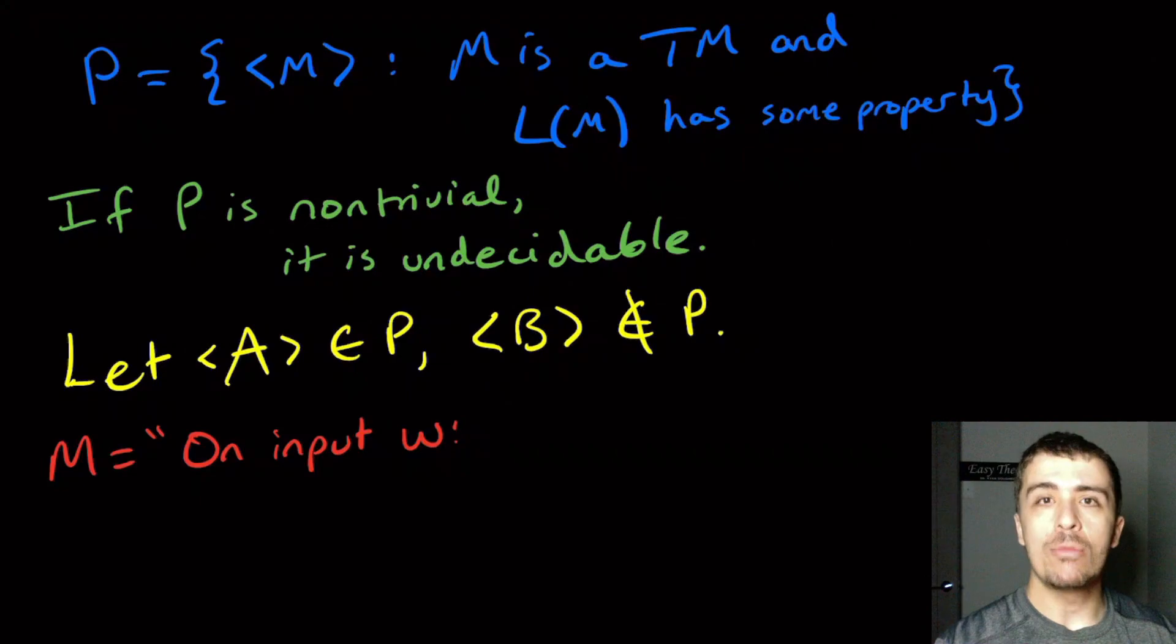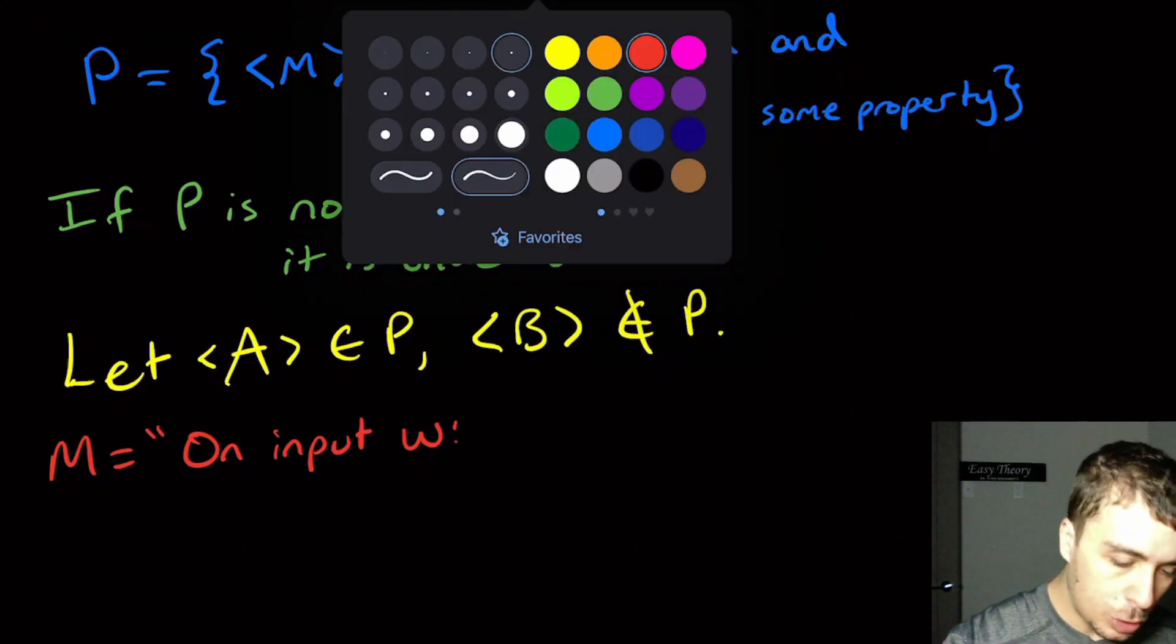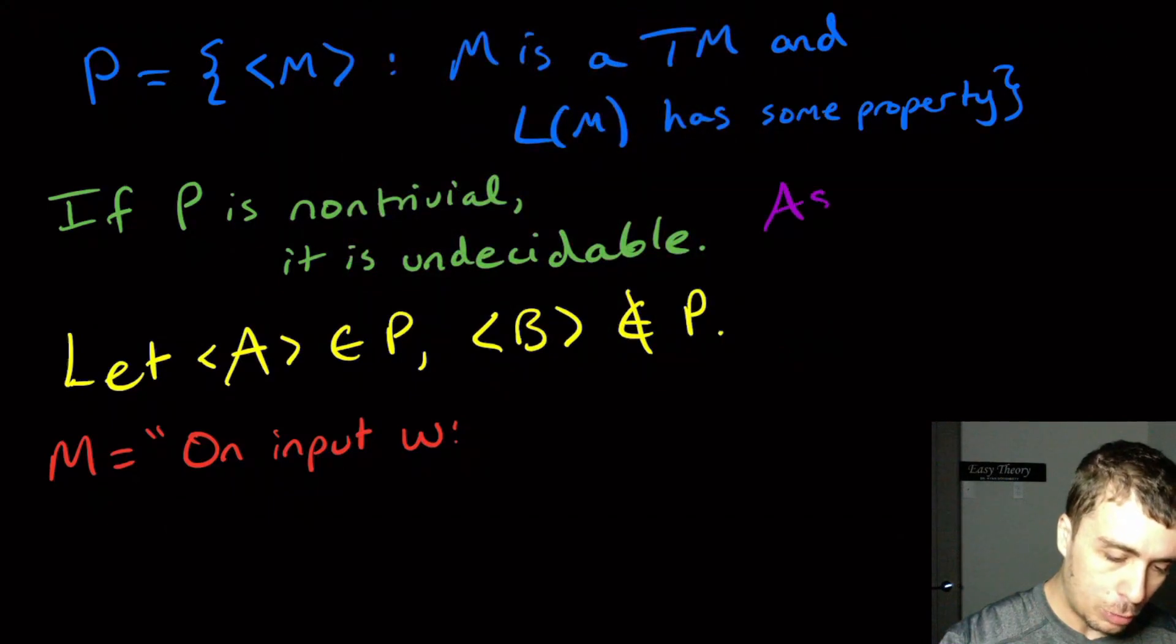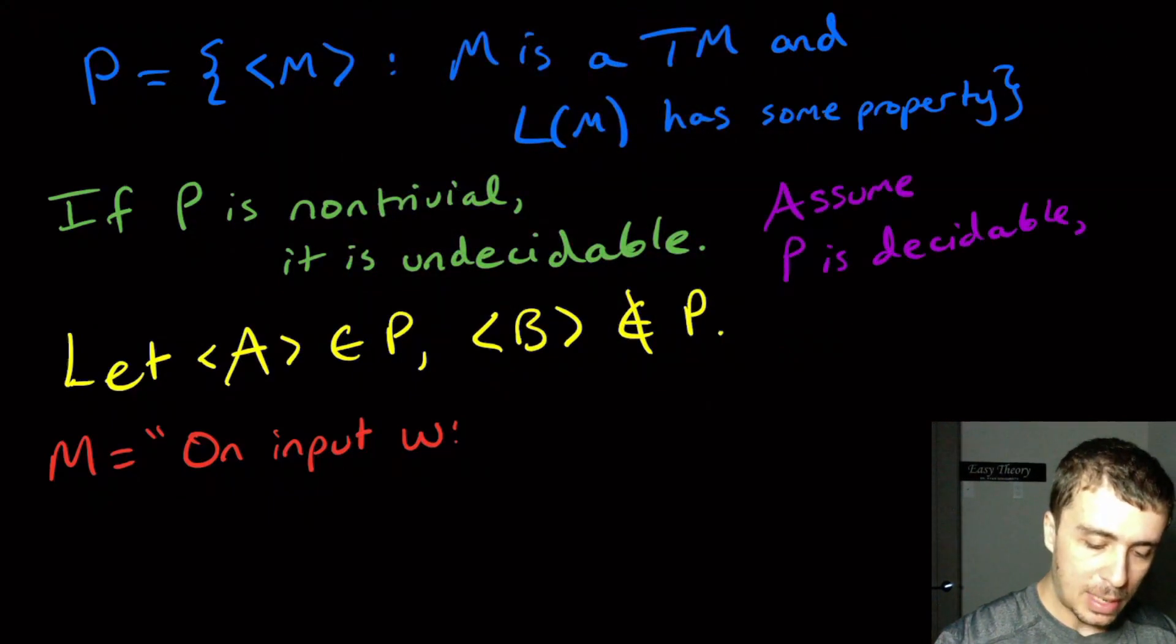I'm going to make a Turing machine M which is going to have some kind of logical contradiction which will disprove whether or not P is decidable. We're going to assume that P is decidable.